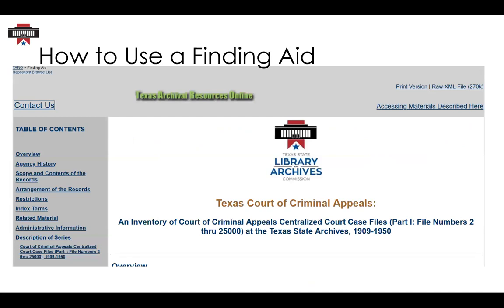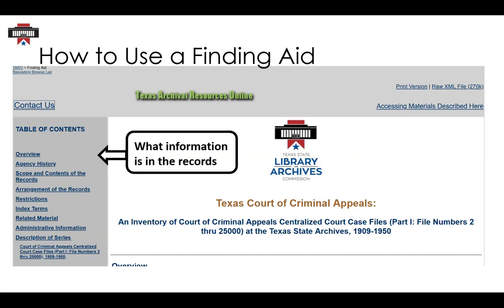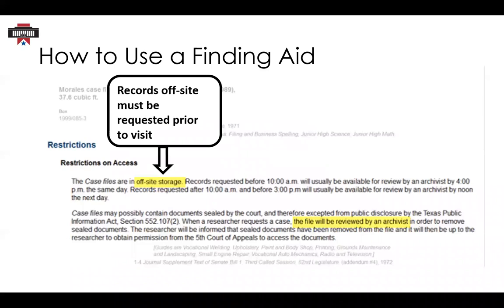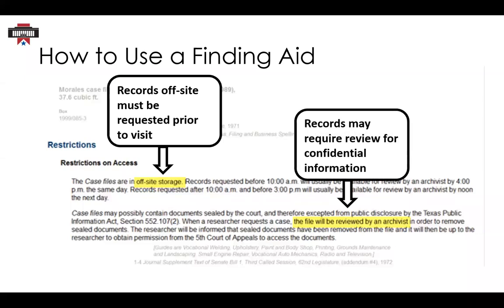Now we're going to talk about how to use a finding aid, and we're going to look at the Texas Court of Criminal Appeals centralized case files. The overview and agency history will talk about what information is in the records. In the table of contents, we also see the restrictions section, which covers information and access restraints — it's always important to check. First, we can see that case files are in offsite storage, so you'd need to request them prior to your visit and allow enough time for delivery, typically one business day. Additionally, some records will have restrictions on access because they contain confidential information and need to be reviewed by an archivist, which can take time depending on the number of records and the nature of the restrictions.